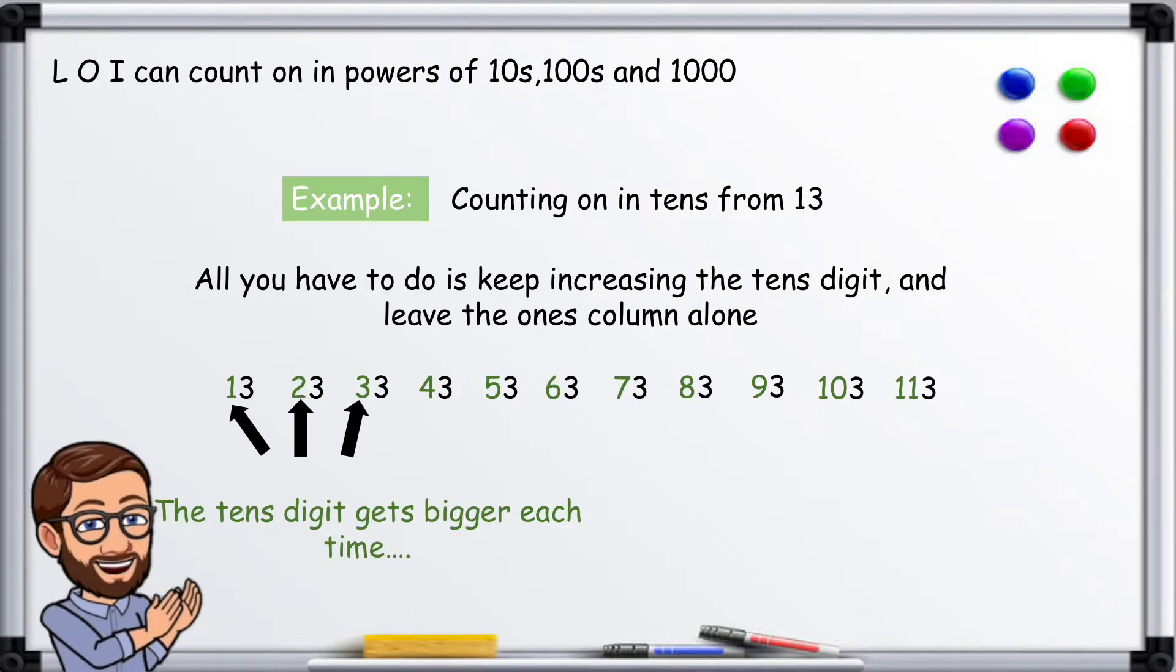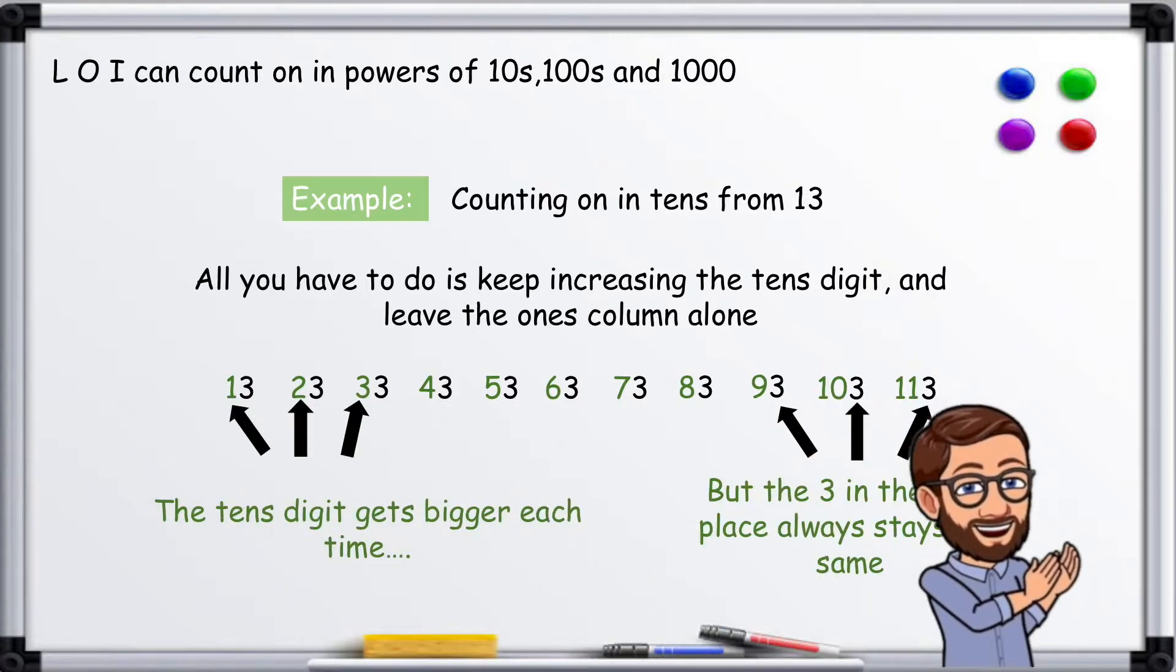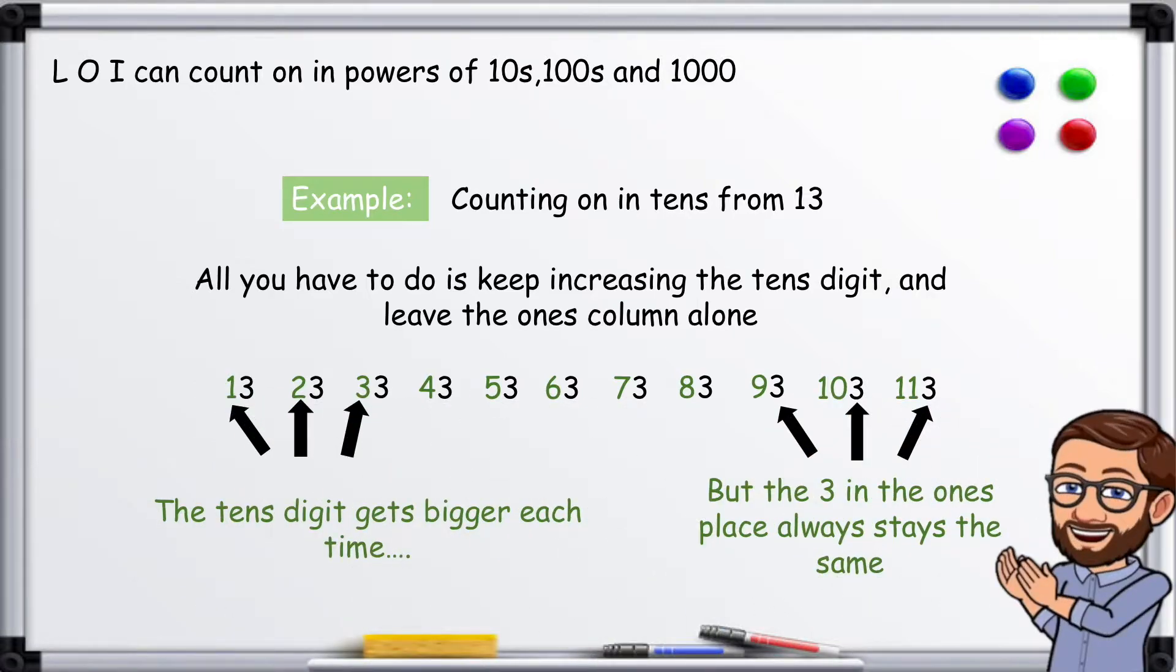The tens digit gets bigger each time, but the three in the ones place always stays the same.